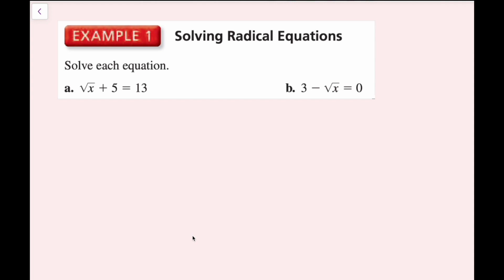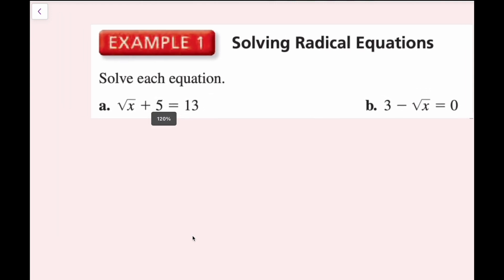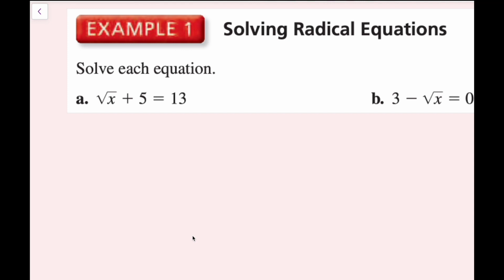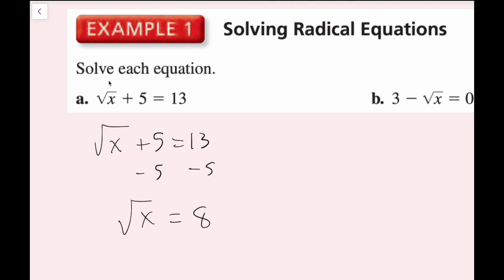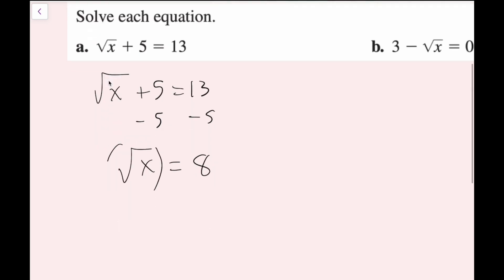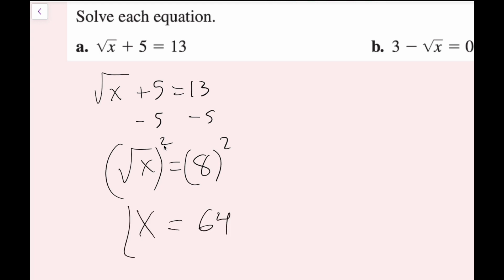For example one part a, I have the square root of x plus 5 equals 13. First, I want to isolate the radical with x in it, so I subtract 5 on both sides to get the square root of x equals 8. Then I square both sides — the square root and the square cancel each other out — so I get x equals 64.